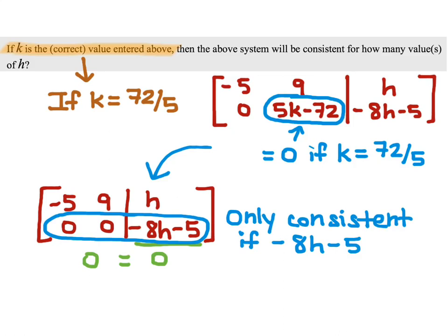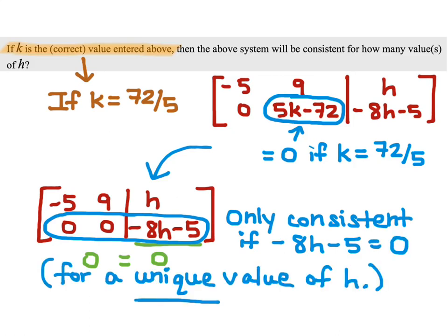So, only consistent if negative 8h minus 5 equals 0, which means for a unique value of h, and that's what the problem was asking for. So, you would select that it's only consistent for a unique value of h, and that concludes our solution to the problem. Thank you.